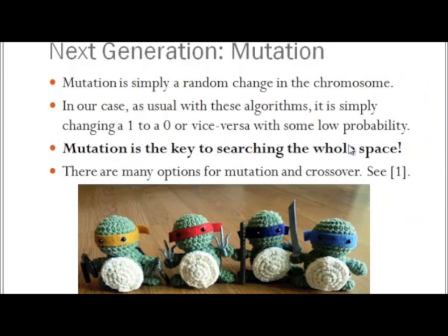We also have mutation. Mutation is as important or more important than crossover. If you were to have no mutation at all, then whatever you chose randomly for your first generation is the only portion of the search space you will ever reach. You cannot crossover your way to every place in the search space — mutation is the key. Since we have chosen a binary representation, mutation is easy: you go through with a small probability and change ones to zeros and vice versa.